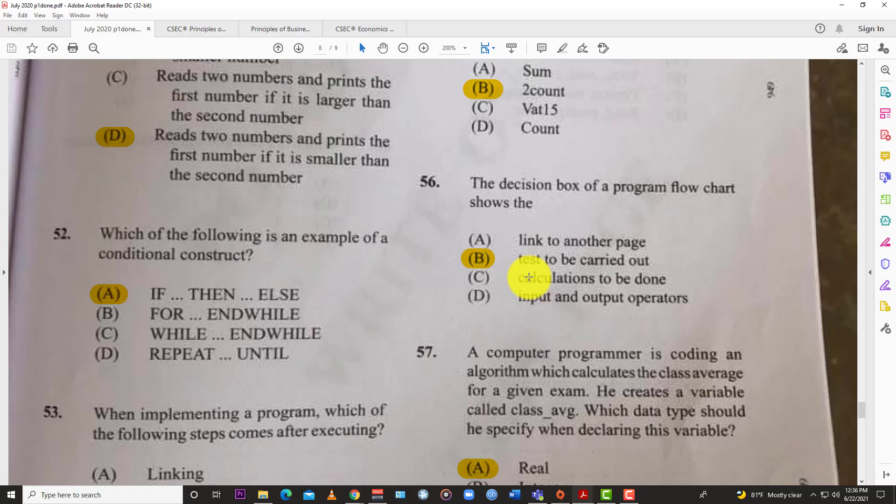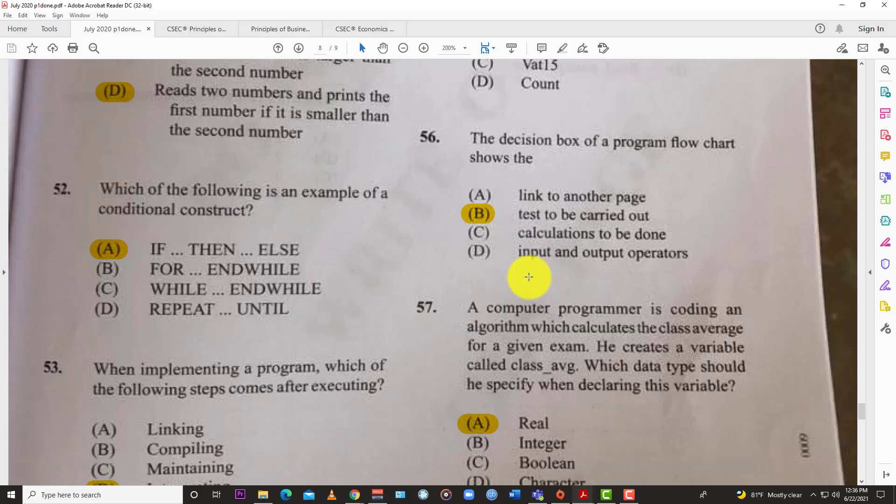Question 52: Which of the following is an example of a conditional construct? This is part of programming, so you all know this already. A, if-then-else. You have to put it in a line in the program to get certain outcomes.